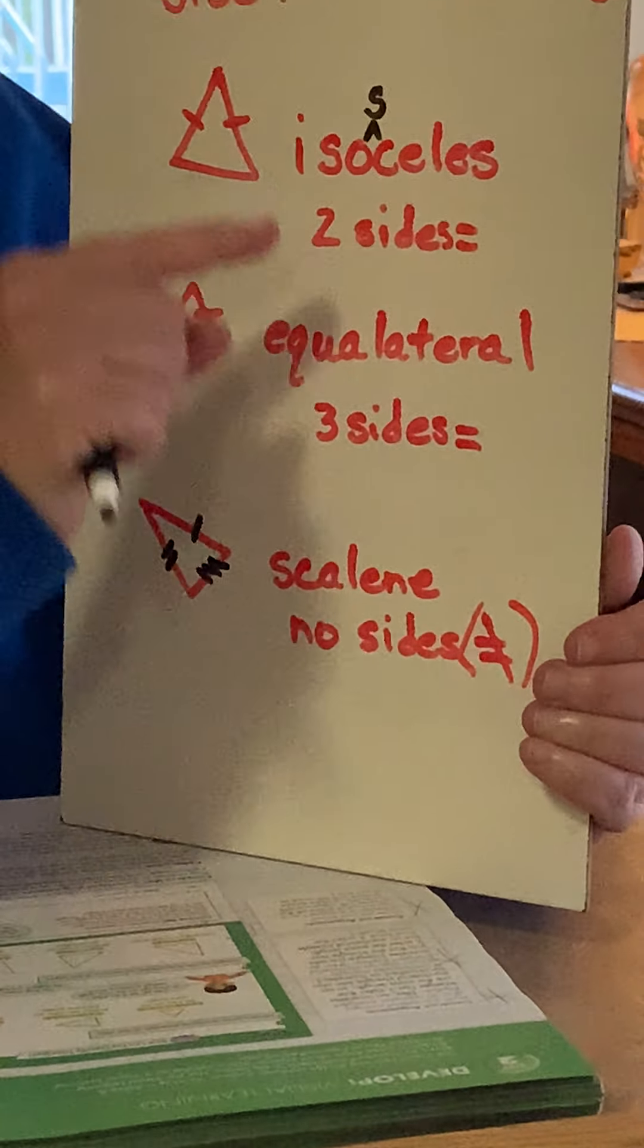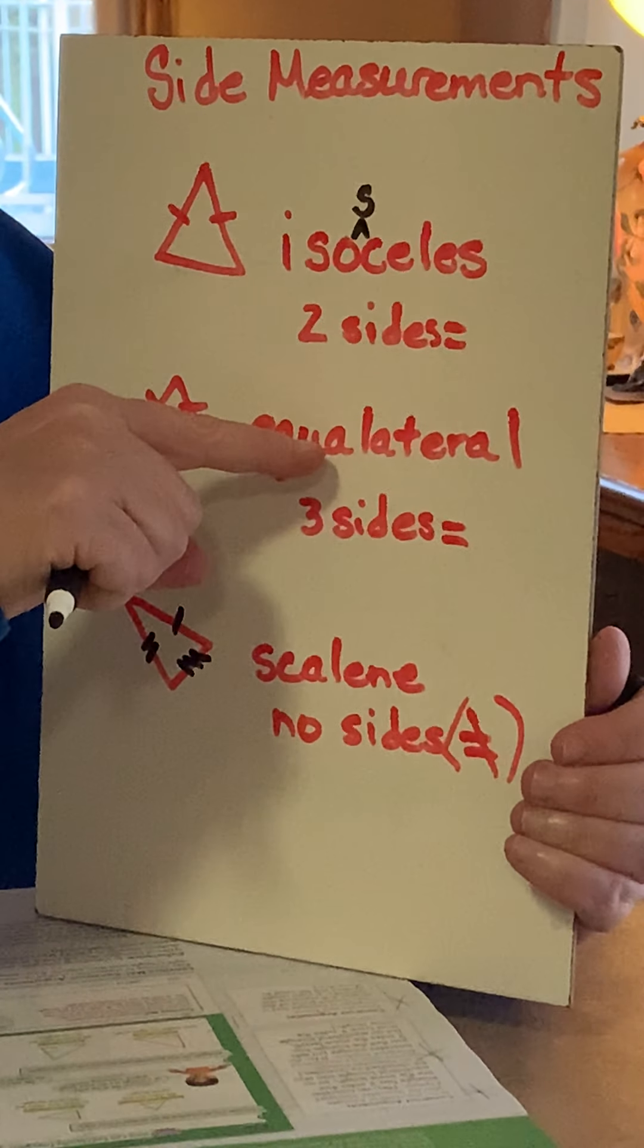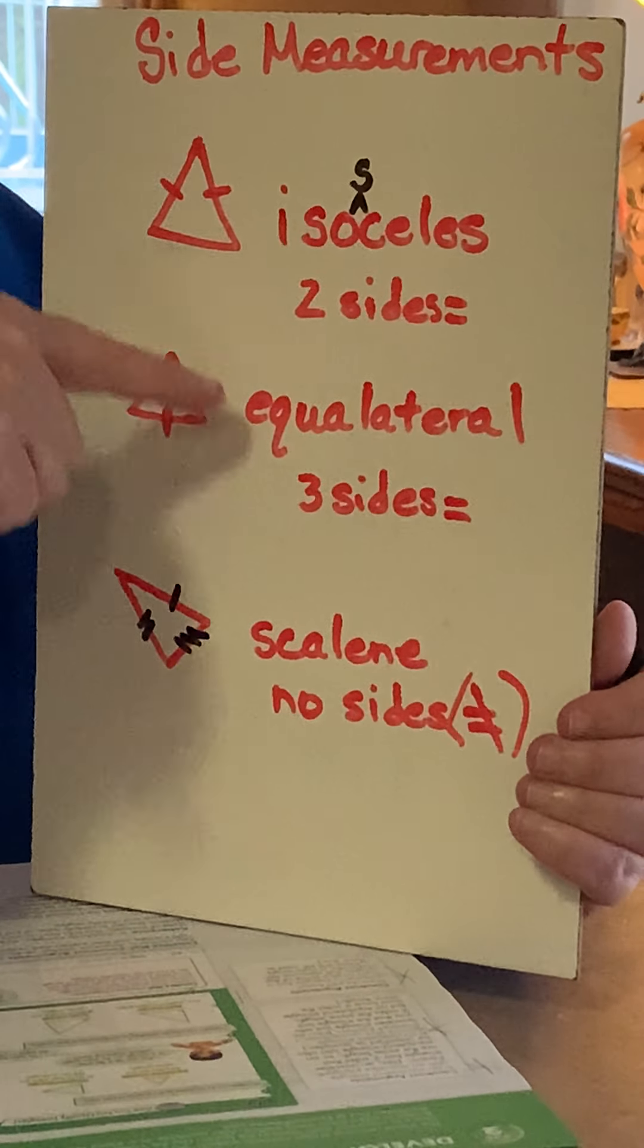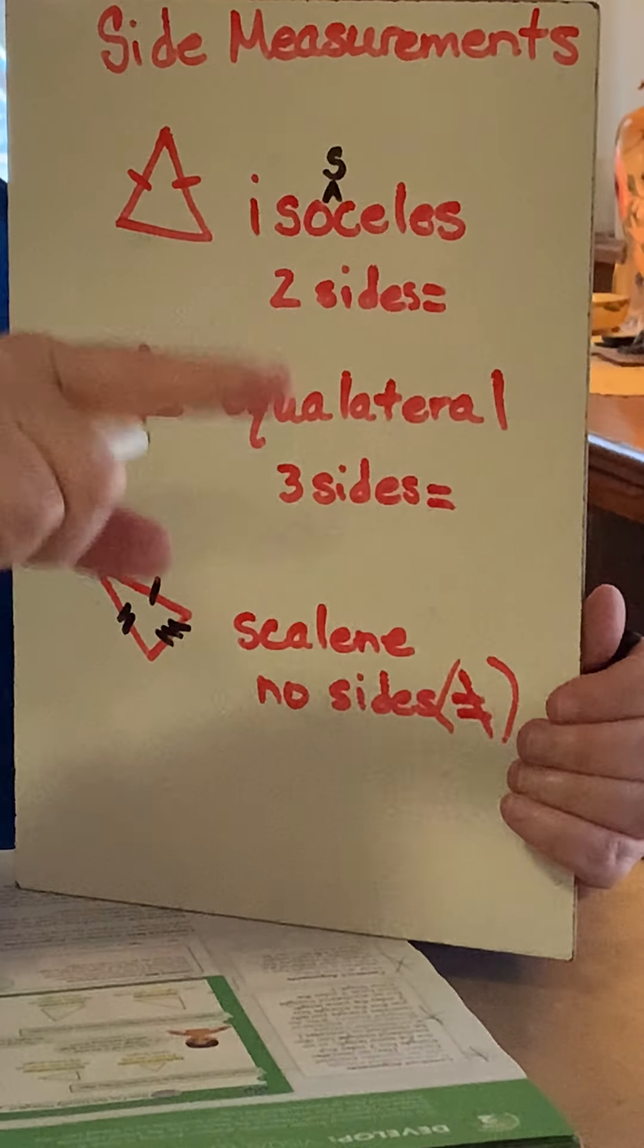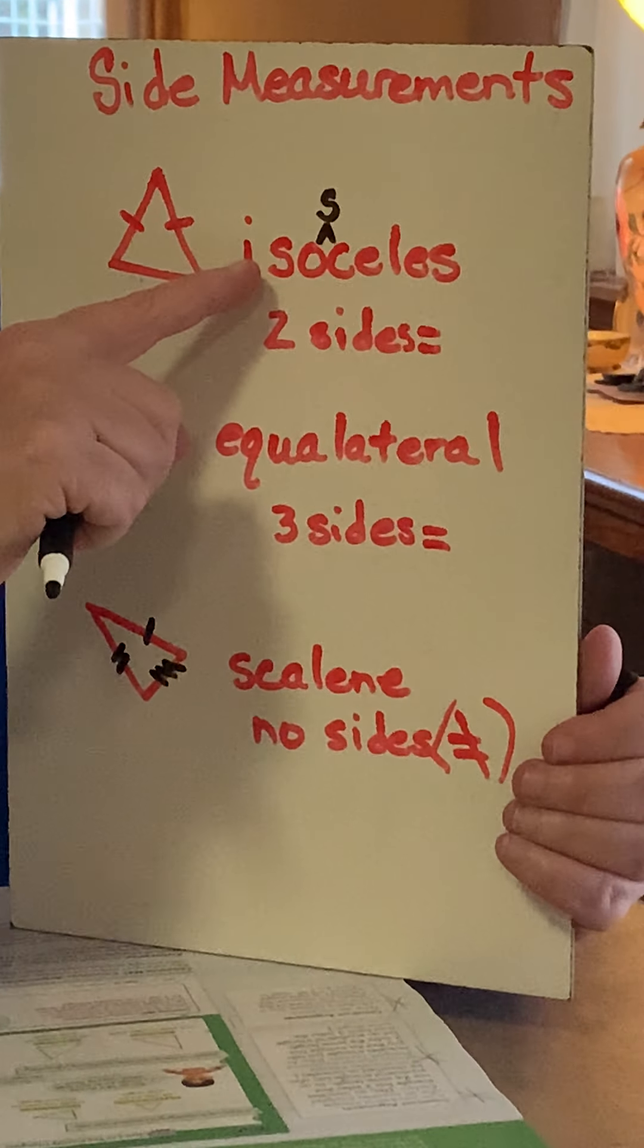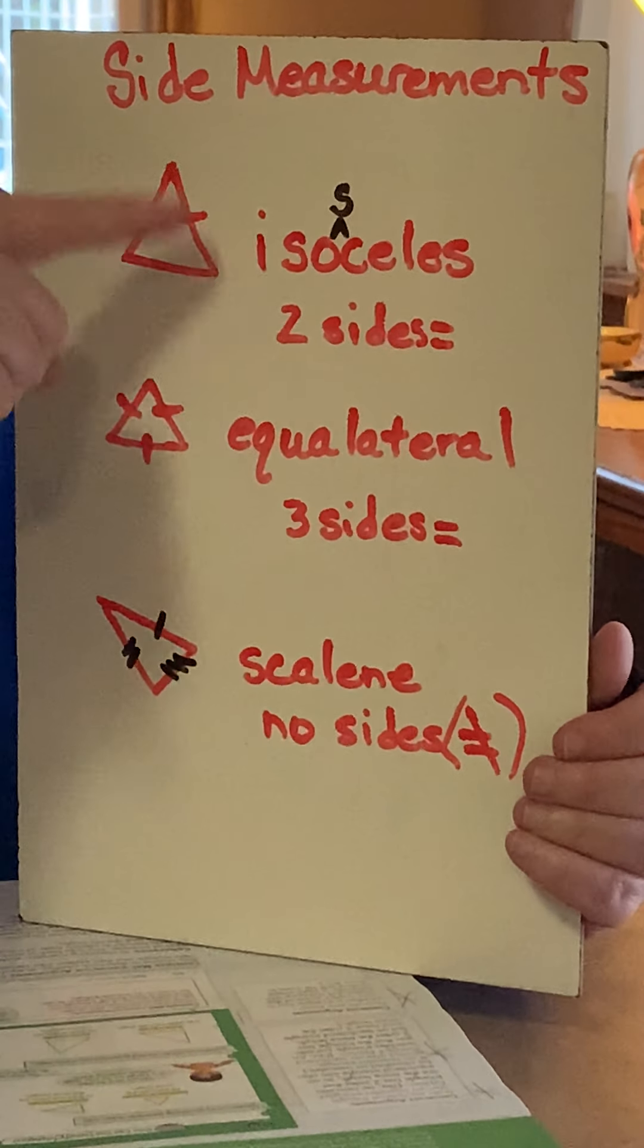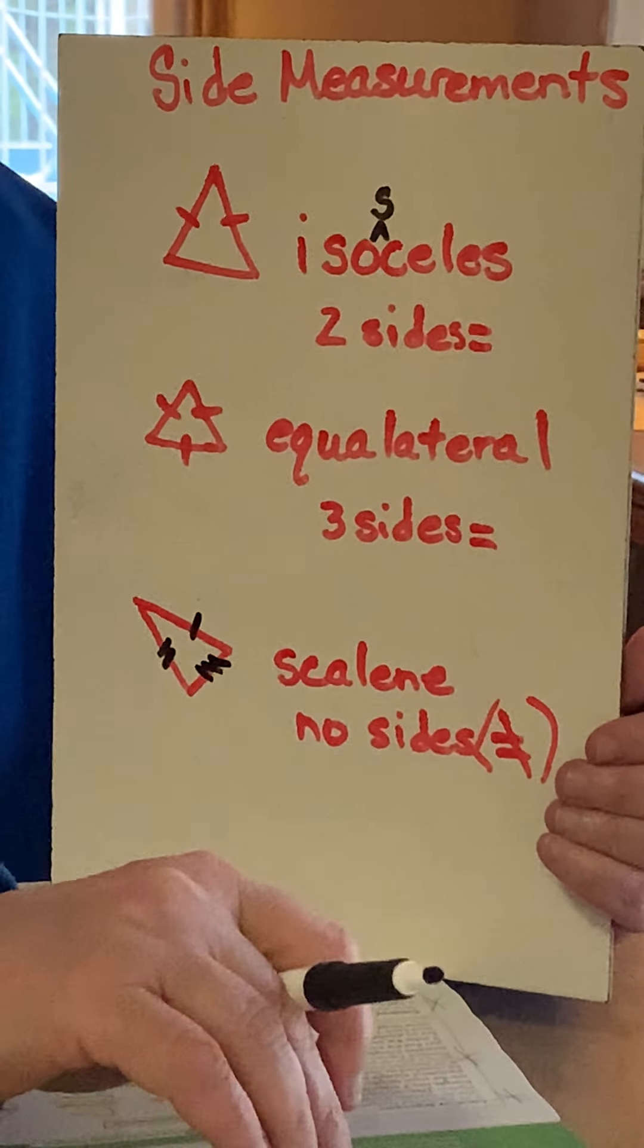Now, yes, an equilateral triangle can be considered also isosceles because it has three sides, so at least has a minimum of two. But you don't have to worry about that. That's kind of the same thing about your squares and rectangles and rectangles and squares. But an isosceles is not always an equilateral. Actually, it's never going to be one because it only has to have two that are the same. So just a little fun fact there.